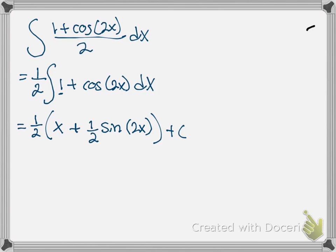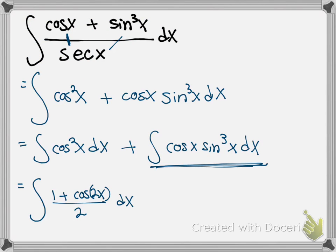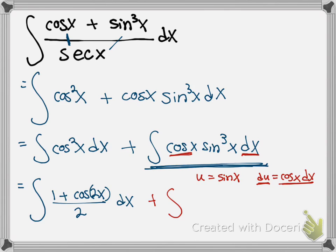That was the first integral. We still have the second piece: the integral of cosine of x times sine cubed of x. That one takes a bit more manipulation — it's going to be a u-sub. I let u equal sine of x, so du is cosine of x dx, meaning the entire cosine of x dx can be replaced with du.